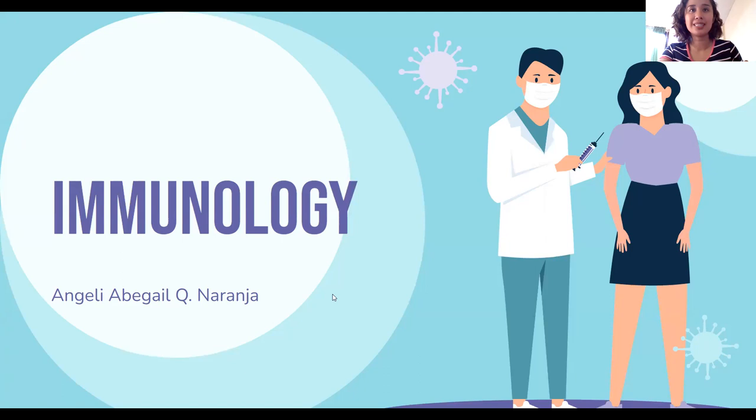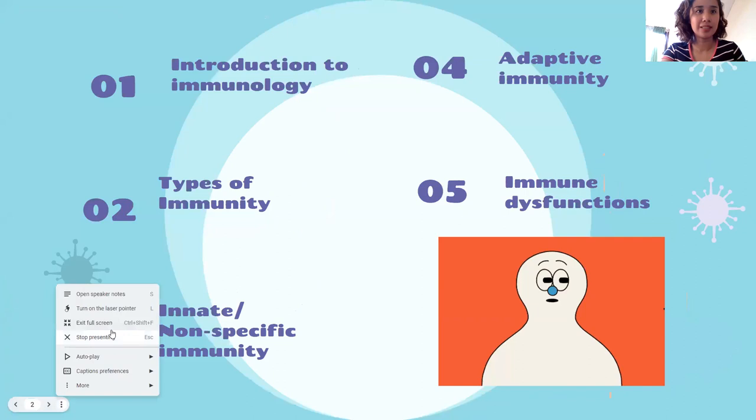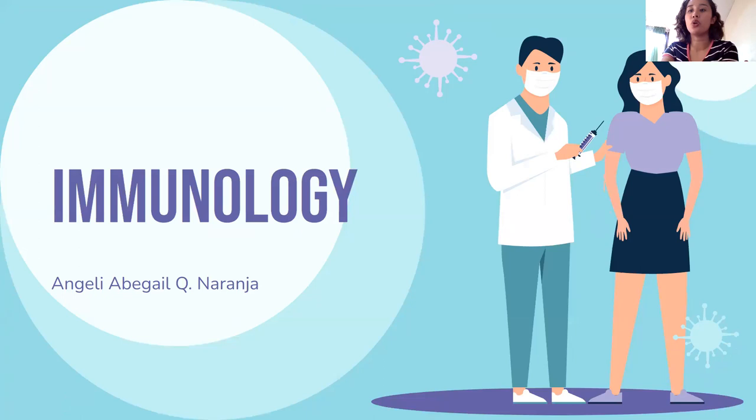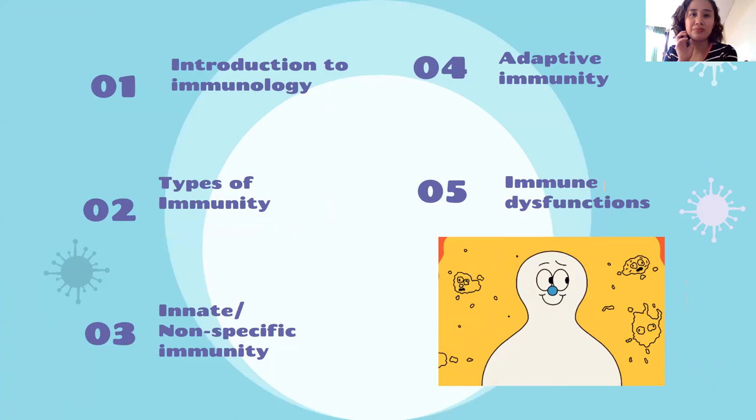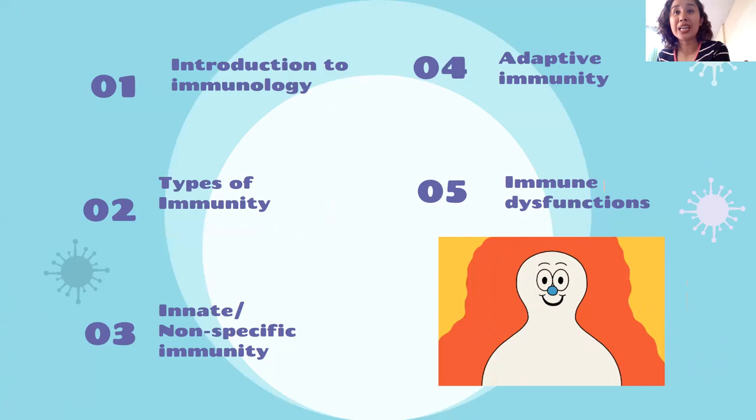Hello, guys. Welcome to our first topic in our second grading. Our topic for this day is immunology. What are we going to expect? So what is immunology? What is in your immune system? The types of immunity — the two types are your innate and adaptive immunity — and the different immune dysfunctions.